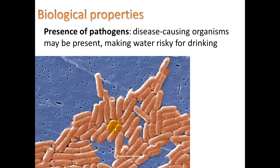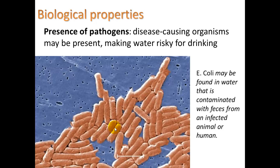Some water quality indicators: we use biological properties. We look for the presence of pathogens, which are disease-causing organisms — they may be present, making water risky for drinking. E. coli may be found in water contaminated with feces from an infected animal or human. We generally call these types of bacteria coliform.